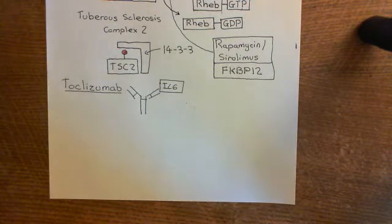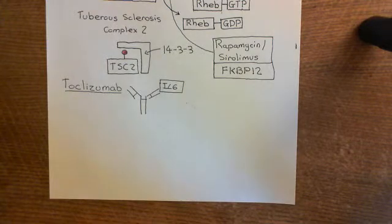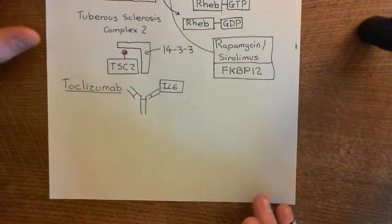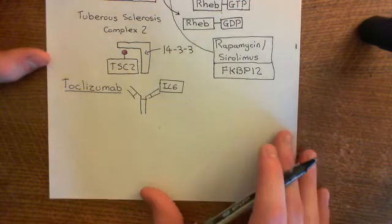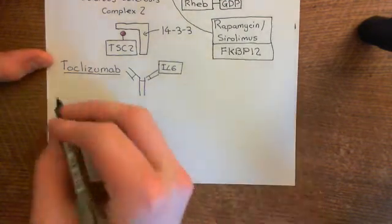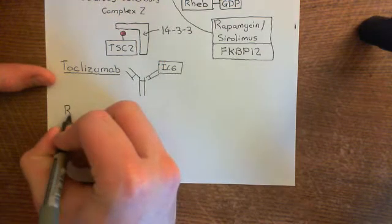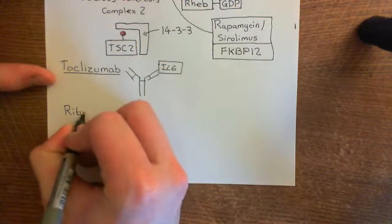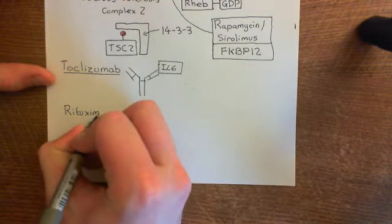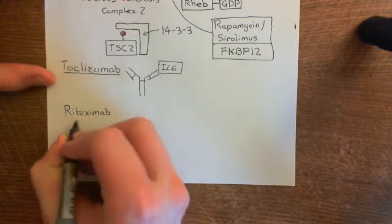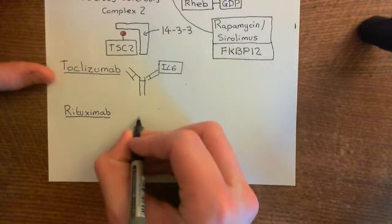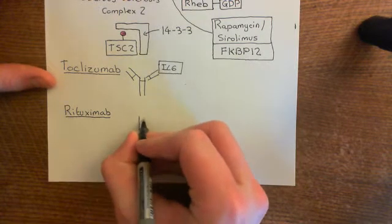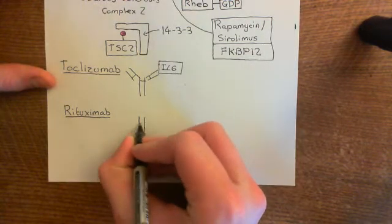Welcome to this next video in which we're discussing the drug treatment of rheumatoid arthritis. We're continuing our discussion of the immunosuppressant drugs. The next drug I want to discuss is called rituximab. This is again a monoclonal antibody drug, and this time rituximab is a monoclonal antibody that is directed against a protein called CD20.